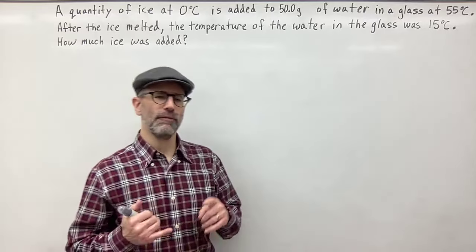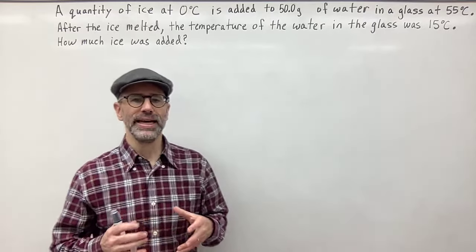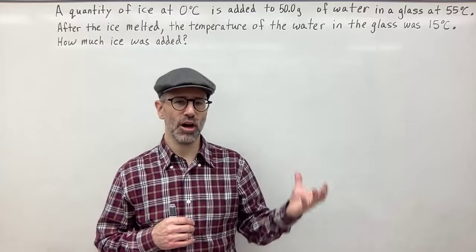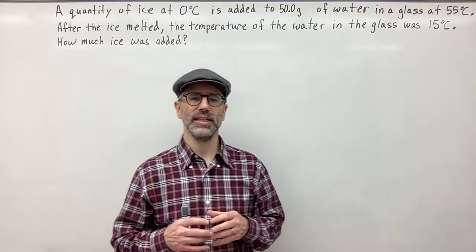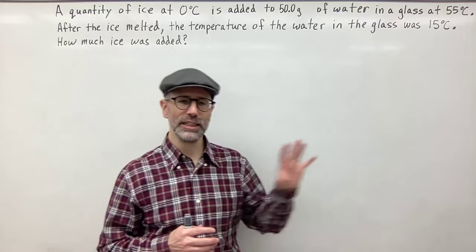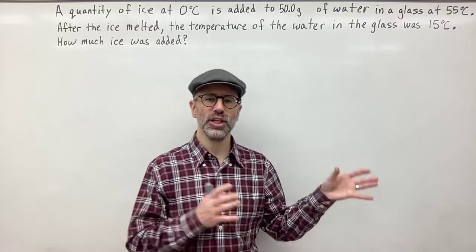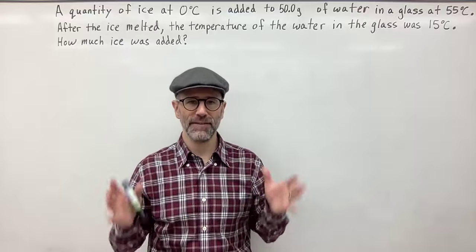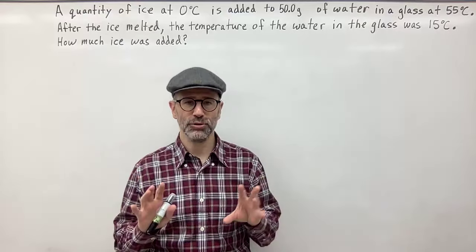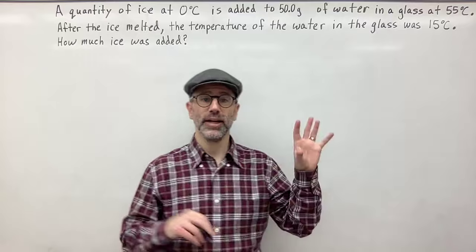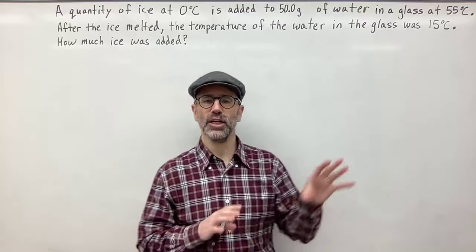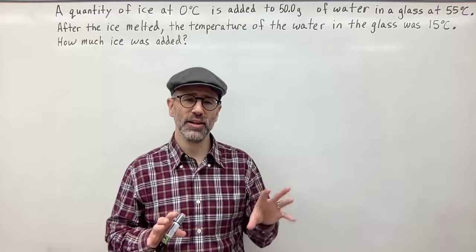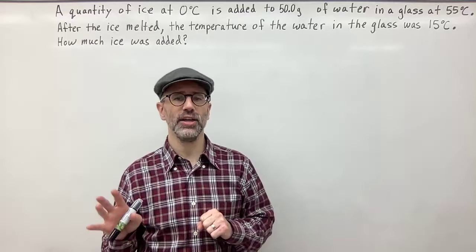The first thing you want to do is identify the things that are giving off heat and those that are absorbing heat — what's transferring heat from and to. Make sure you identify all of those Q values, because Q equals mcΔT. We could use other formulas, but first we need to identify where things are absorbing heat and where things are giving off heat.